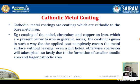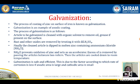Now let us discuss anodic metal coating in detail — galvanization. What is galvanization? The process of coating zinc on the surface of iron is known as galvanization. This is an anodic metal coating because zinc is present above iron in the electrochemical series. Zinc has an electrode potential of −0.76 V and iron has −0.44 V, so zinc is coated on iron.